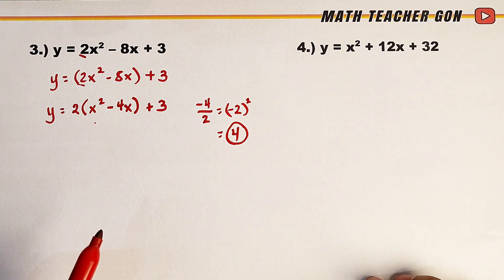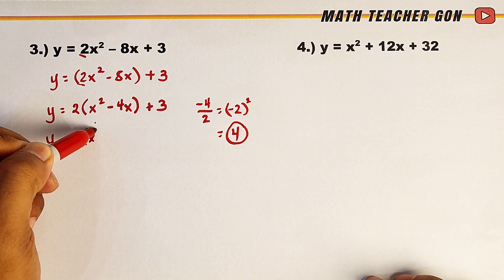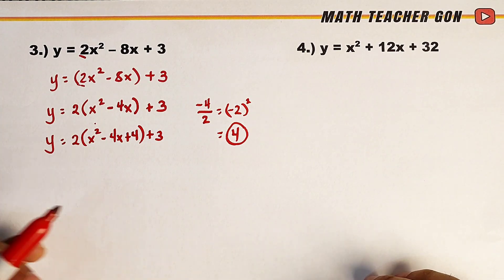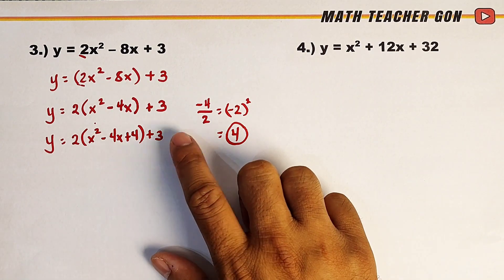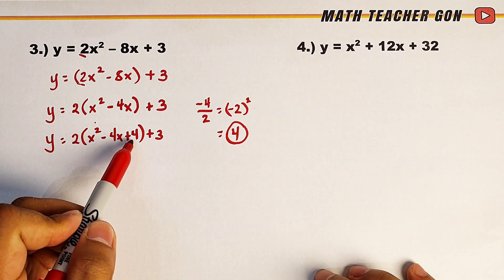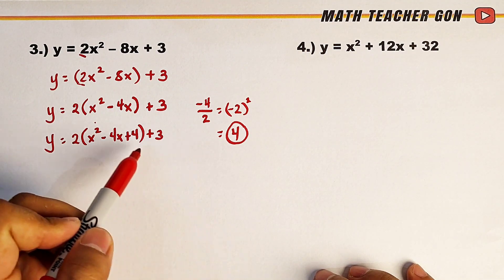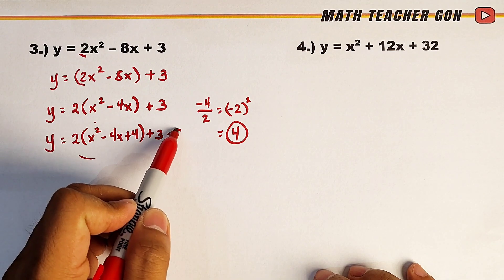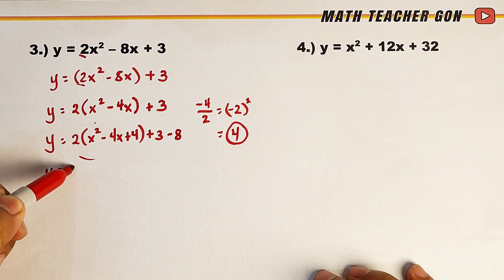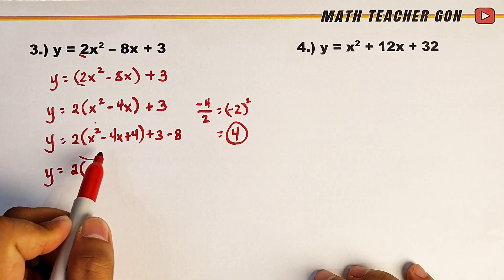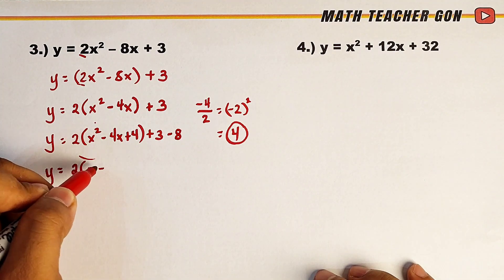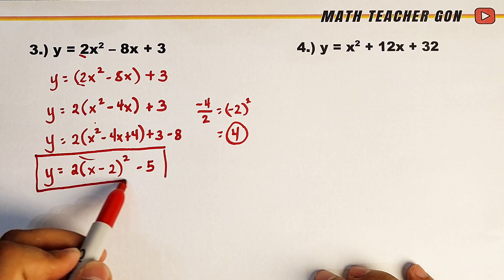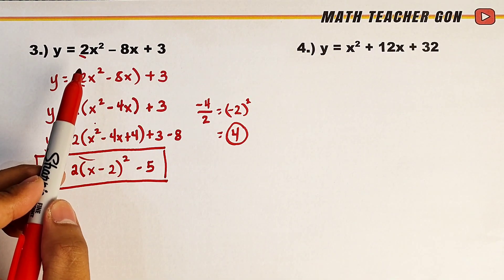Now listen carefully. This becomes y is equal to 2 times x squared minus 4x plus 4, then plus 3. We are not going to simply subtract 4 here. Since 4 was added inside the parentheses multiplied by a, which is 2, we must subtract 4 times 2, which equals 8. So it becomes minus 8 outside. Continuing, y is equal to 2 times the quantity x minus 2 raised to the second power, and 3 minus 8 gives negative 5. This is now the vertex form of y is equal to 2x squared minus 8x plus 3.